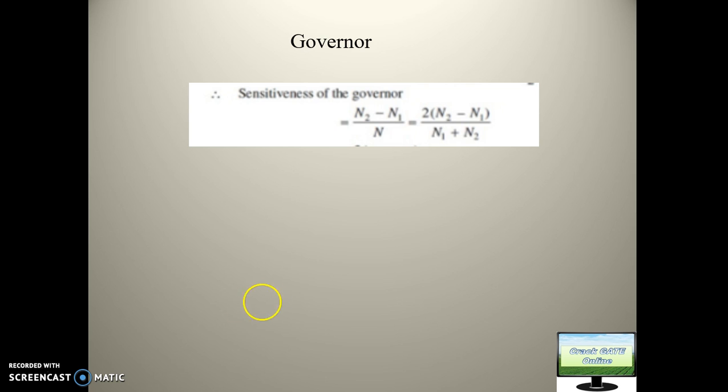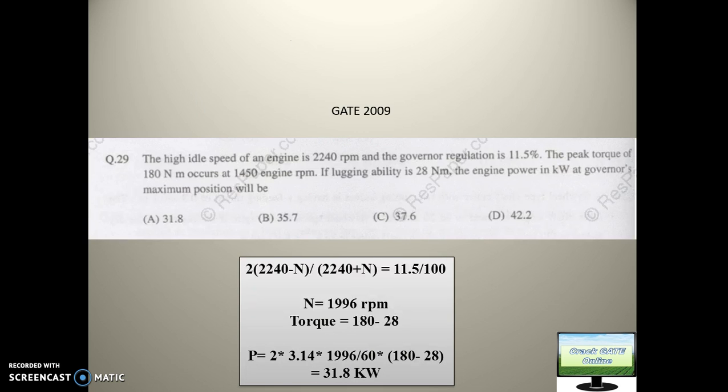Sensitivity of the governor can be formulated using N2, which is final RPM. Suppose its range is 100 RPM to 200 RPM, so final RPM is 200. Beyond that governor will not work. Maximum RPM that a governor can achieve is N2 and minimum RPM is N1. Sensitivity of governor will be N2 minus N1 divided by N average. This N average is N1 plus N2 divided by 2. So finally it will be 2 times N2 minus N1 divided by N1 plus N2. This is sensitivity of governor. Many times GATE has asked questions on this. This formula looks very simple but they have asked 2 to 3 times questions on this topic.